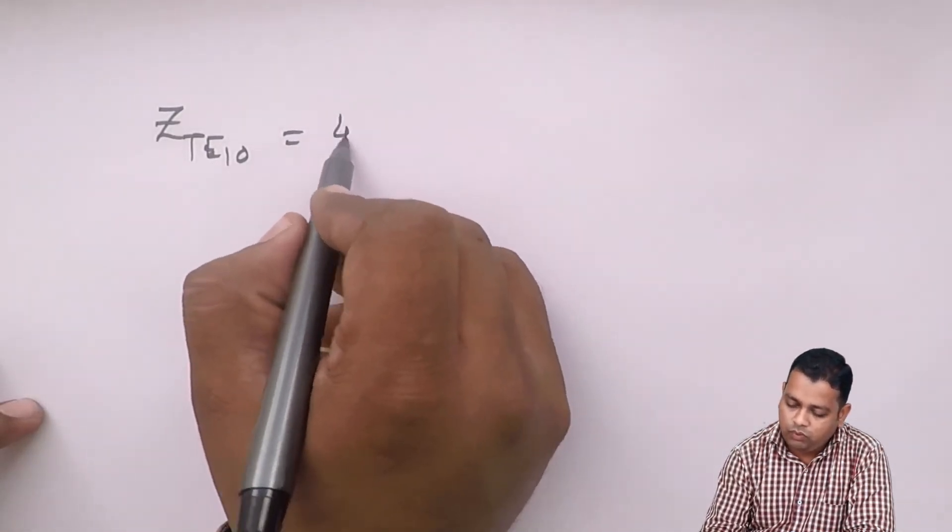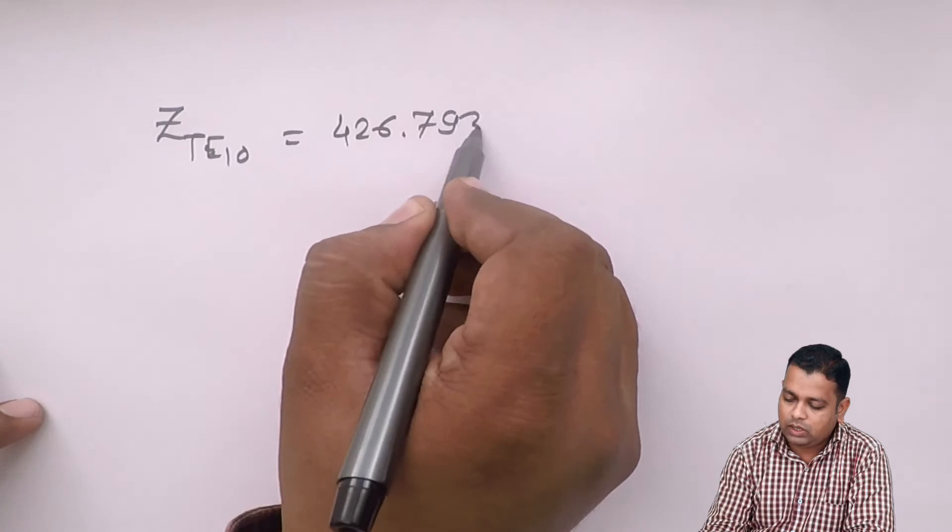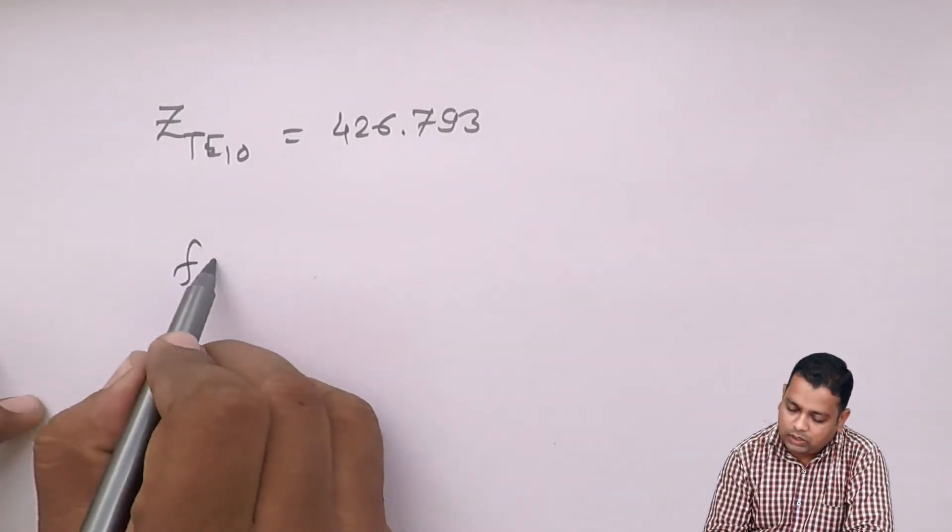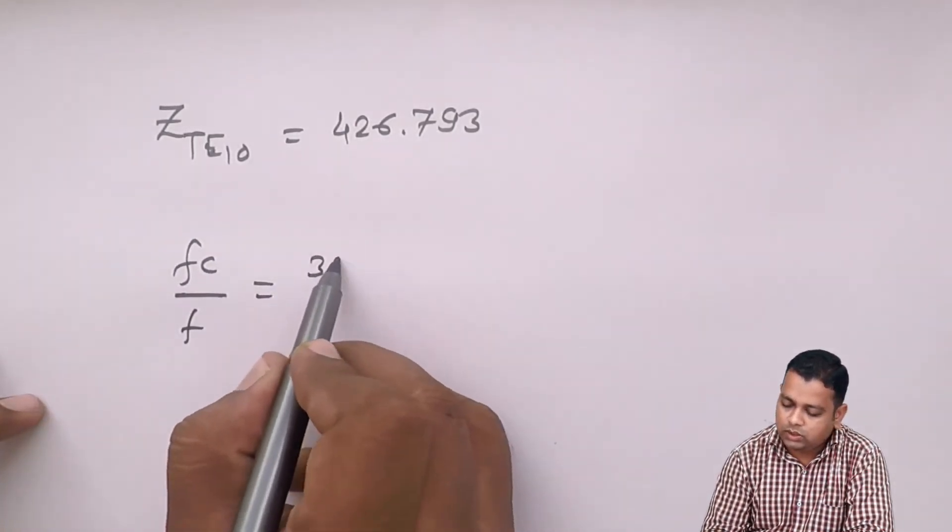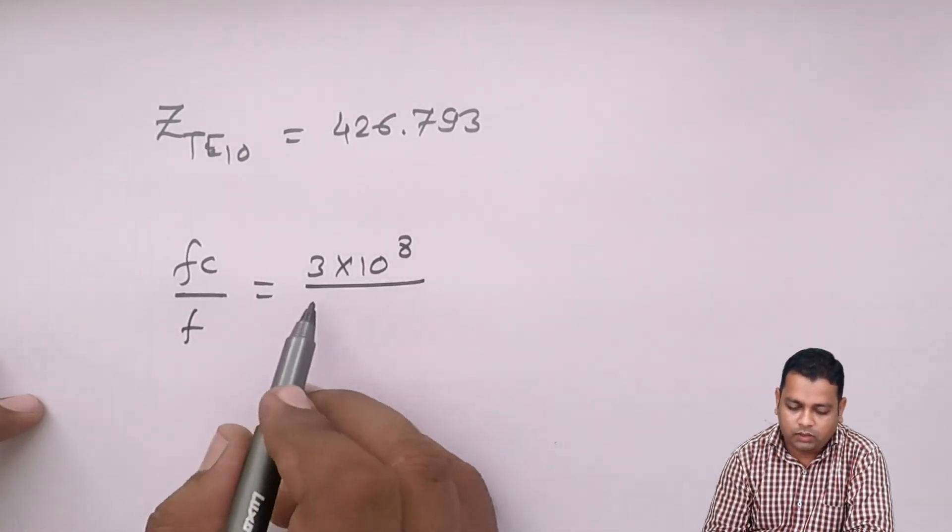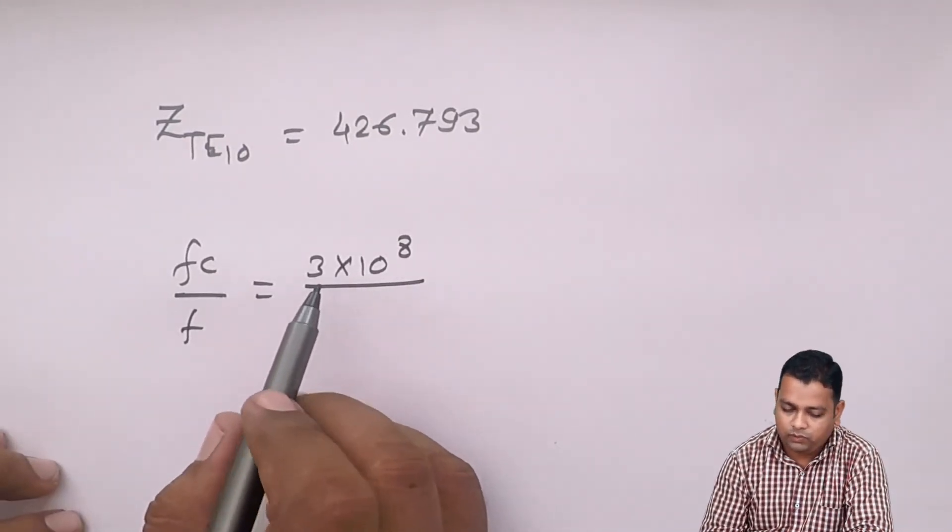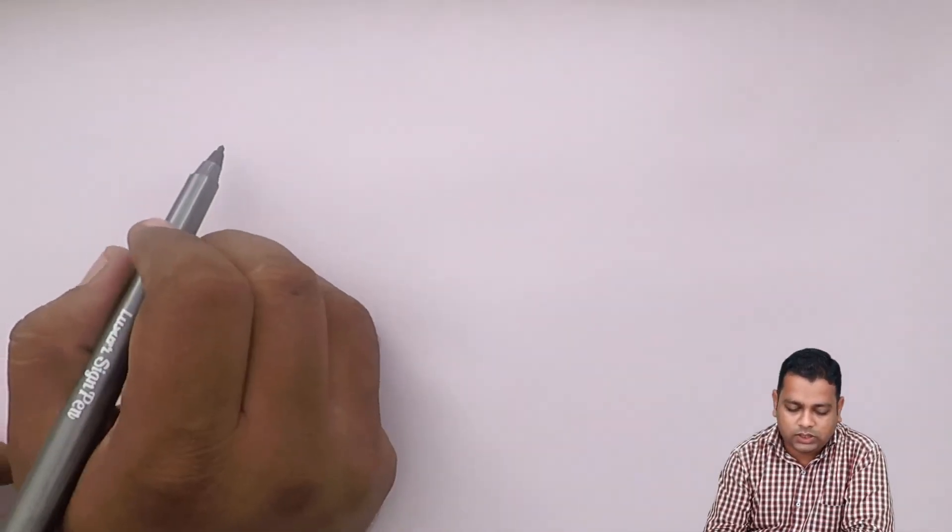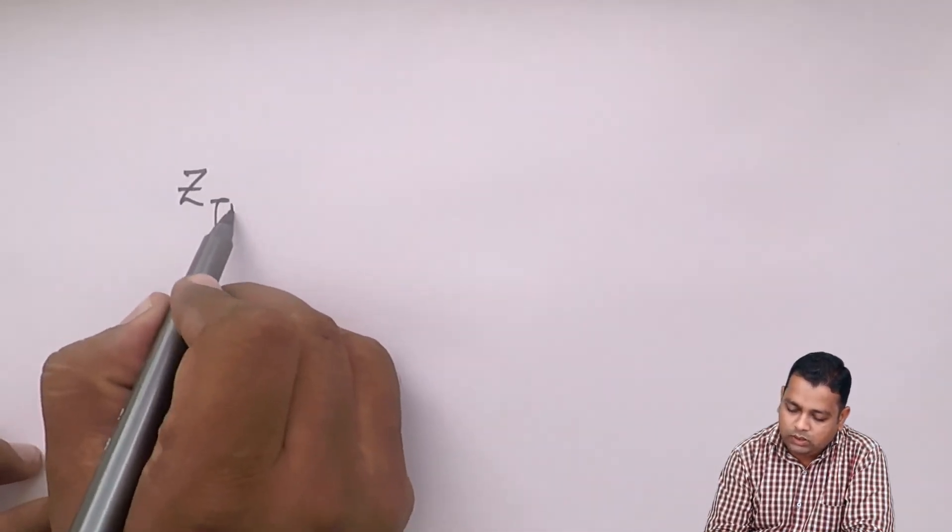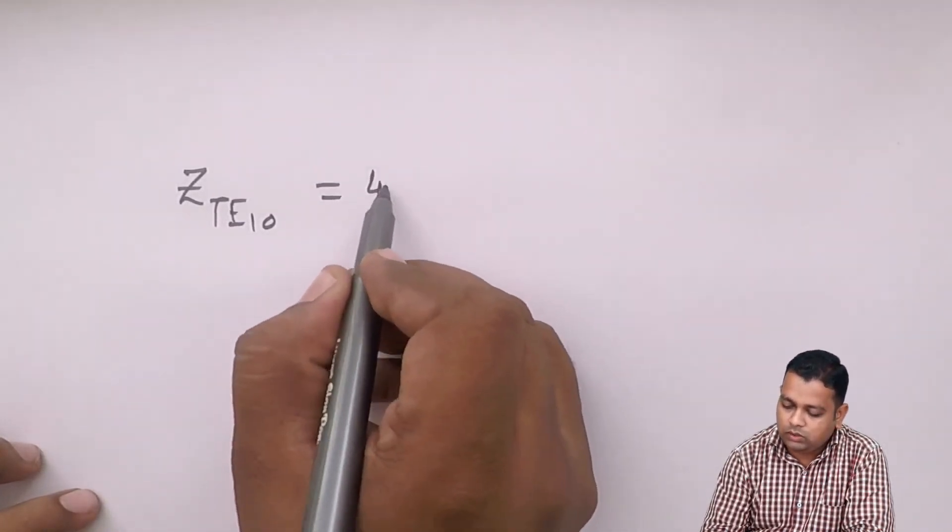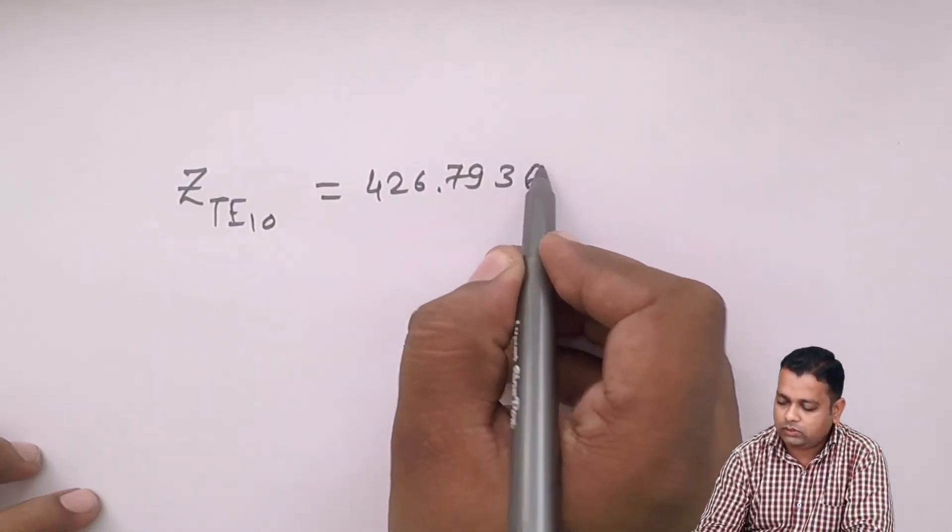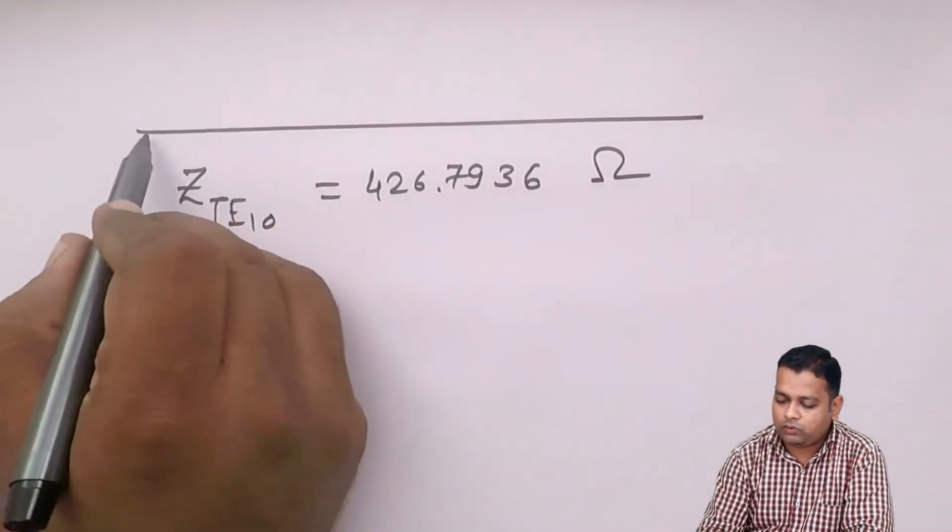Therefore, the wave impedance for the given conditions of rectangular waveguide, we obtained ZTE10 given by 426.793 ohms. The substitution of the denominator second term in square root is actually Fc upon F, that is 3 into 10 to power 8 divided by the F value. The wave impedance in SI system of units is ohms, hence ZTE10 equals 426.7936 ohms.